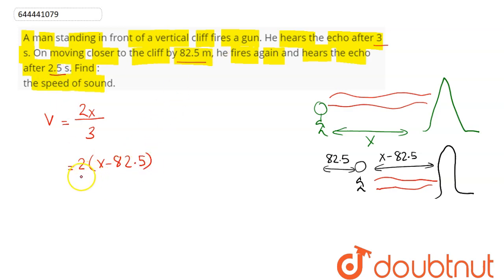Equating both expressions for V, we get x/3 equals (x - 82.5)/2.5. Canceling 2 from the numerator, we have 2.5x = 3(x - 82.5).